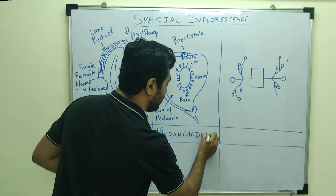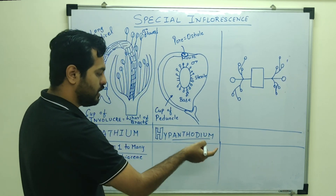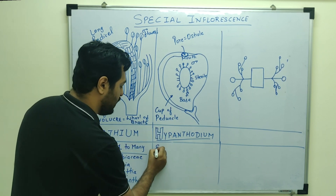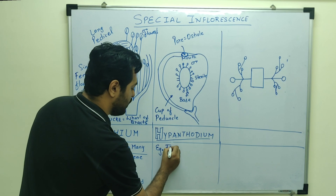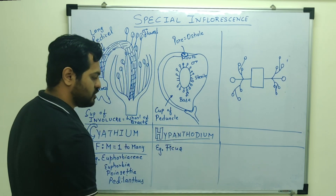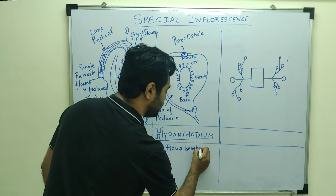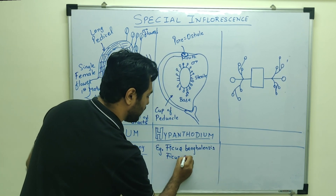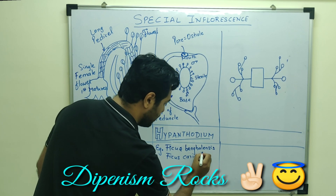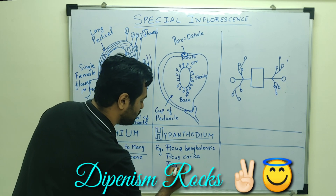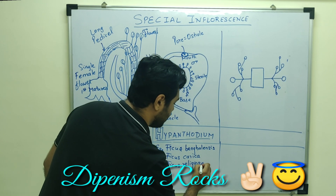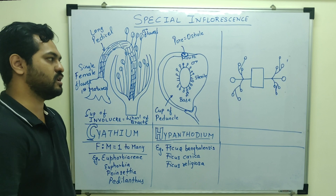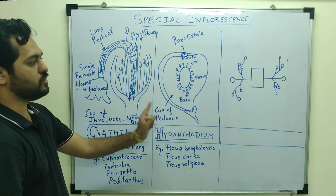In the previous video we discussed anthodium inflorescence; this is called Hypanthodium inflorescence, and it is observed mainly in Ficus species — Ficus bengalensis, that is the Banyan tree; Ficus carica, meaning fig or Anjeer; and Ficus religiosa, that is the Peepal. So in Ficus species, Hypanthodium special inflorescence is seen, and the flowers are unisexual.